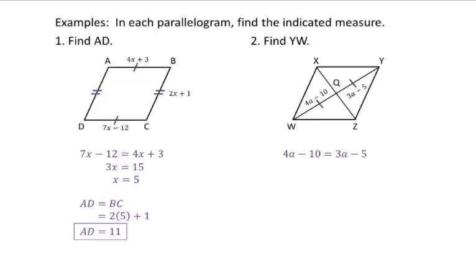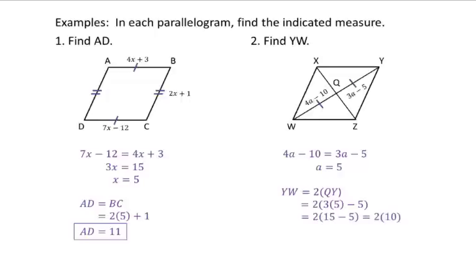Solving this equation: subtract 3a from both sides and add 10 to both sides, and a equals 5. They asked me to find YW, which is the length of the whole diagonal. Each piece, QY or QW, is half the size of the whole, so YW equals 2 times QY. That's 2 times 3a minus 5. Plugging in a equals 5: 2 times 3 times 5 minus 5, which is 2 times 10. So YW equals 20.